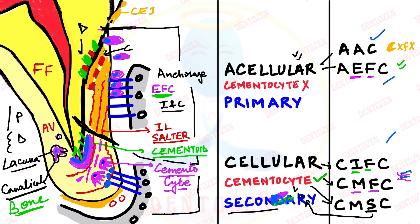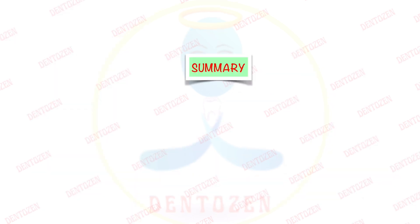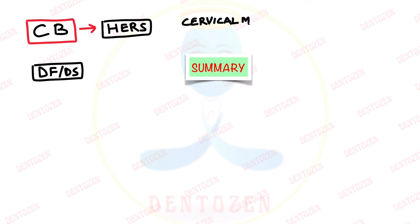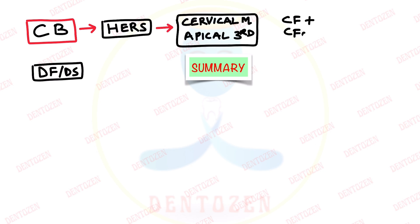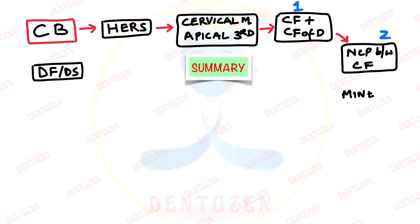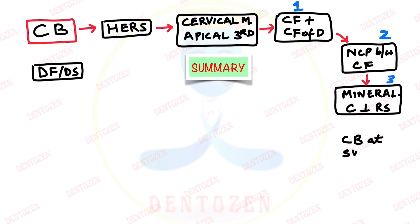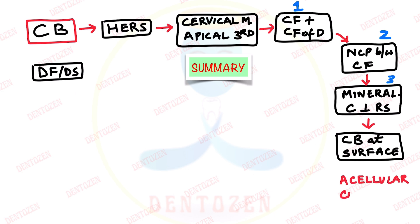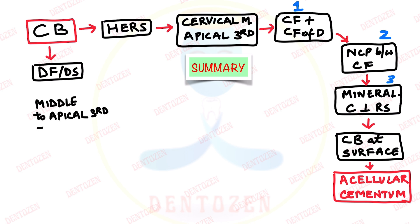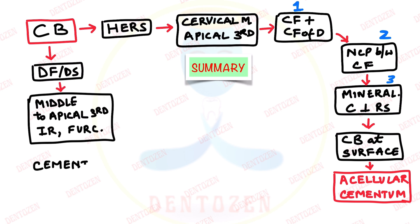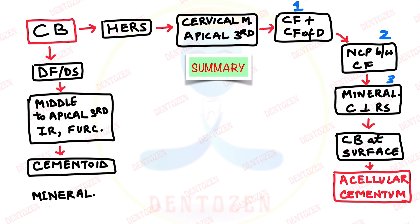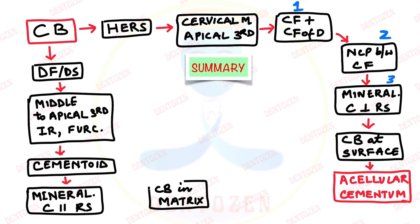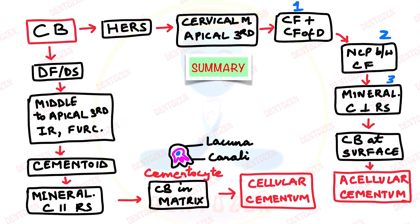In summary, the classification is: first, acellular vs. cellular; second, based on fibers — giving five classes. For the flowchart: cementoblasts come from HERS or dental follicle. HERS-derived ones form cementum from cervical to apical two-thirds in three steps — collagen fibers mix with dentine collagen, non-collagenous proteins come in, then mineralization occurs; cementoblasts stay on the surface, giving acellular cementum. Dental follicle-derived cementoblasts form cementum in the middle-to-apical third and furcation areas: cementoid forms first, gets mineralized, cementoblasts get entrapped as cementocytes living in lacunae with processes in canaliculi, giving cellular cementum.